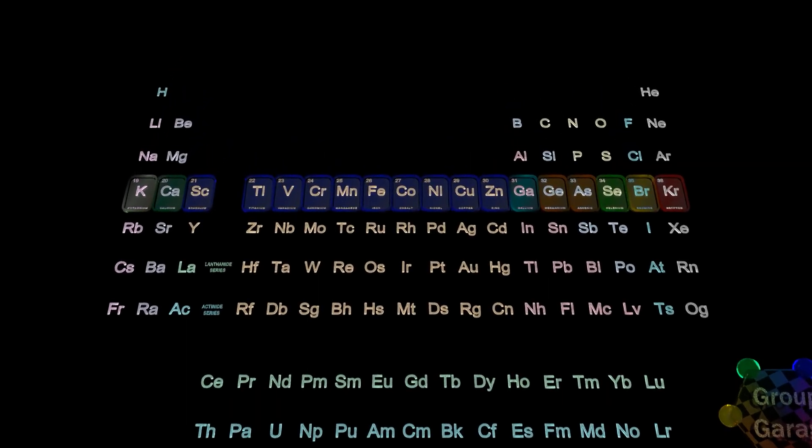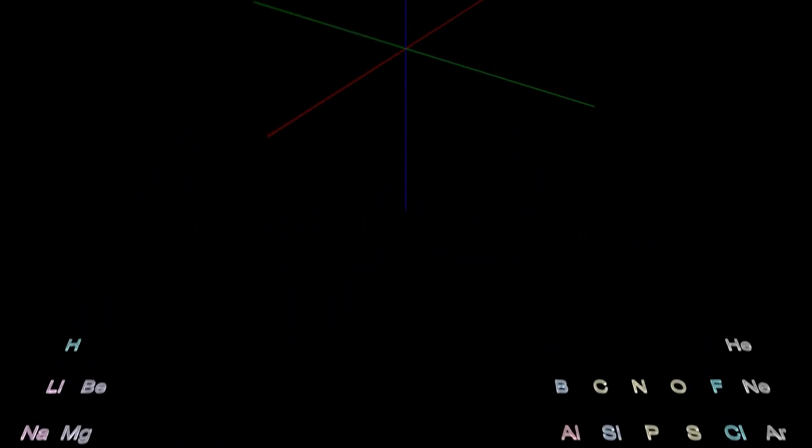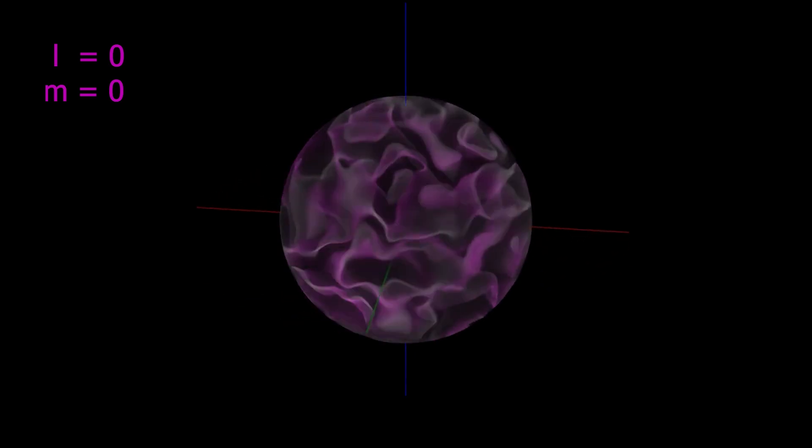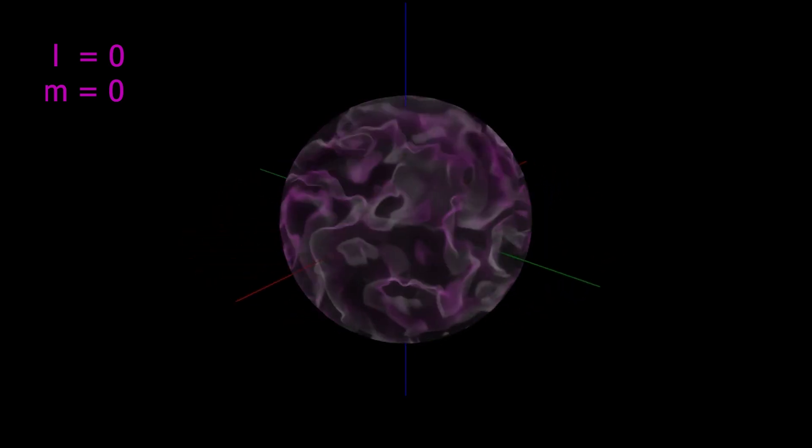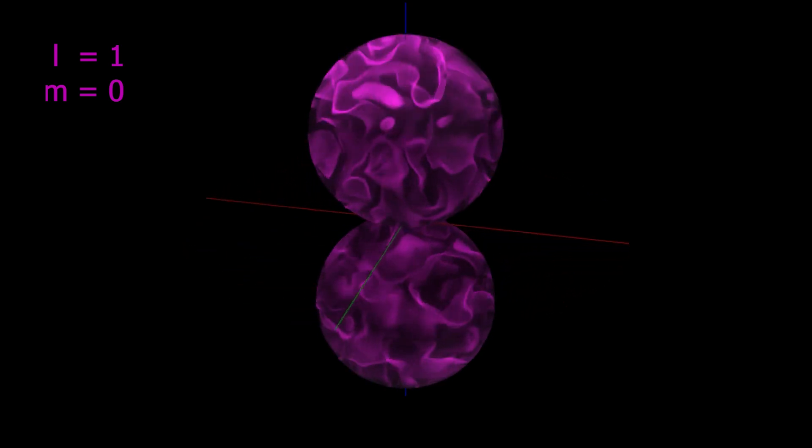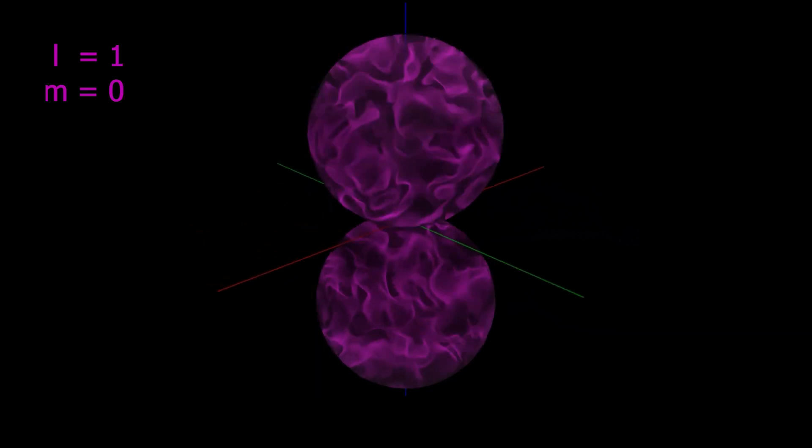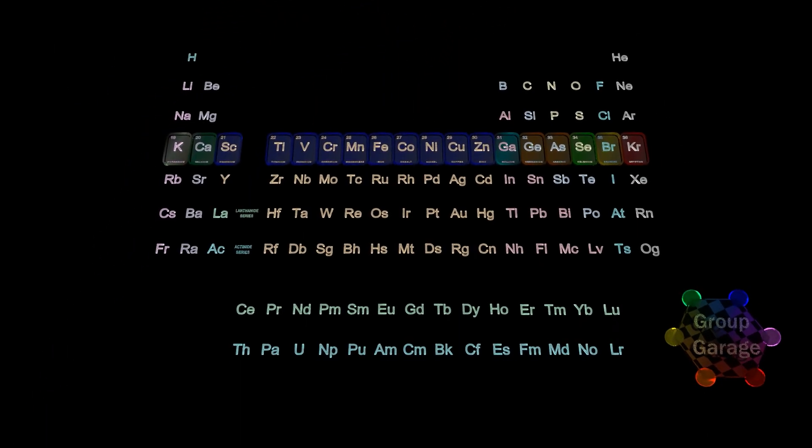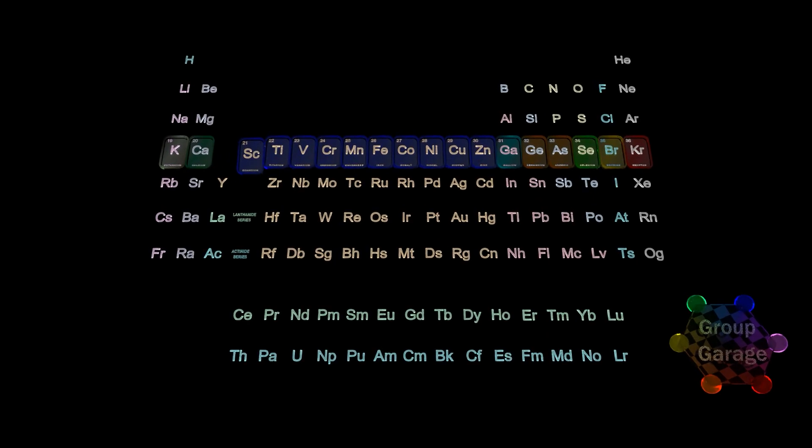But what do d orbitals look like? Remember the angular momentum number L determines the shape of the orbital. L equals 0 is spherical, so we used sharp's S for spherical. L equals 1 was dumbbell shape, so we used the principle's P for polar. But unlike the p orbitals, when the angular momentum L equals 2, we see that some of the d orbitals will have different shapes.